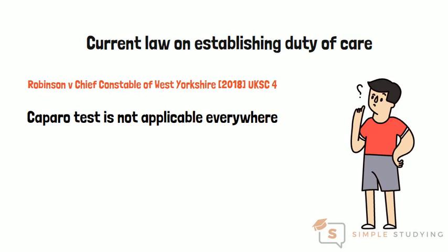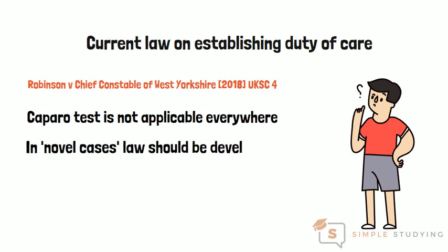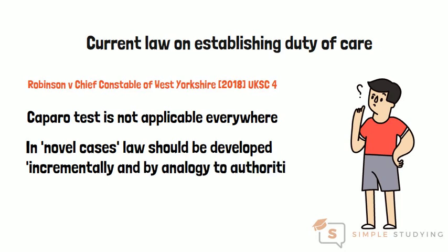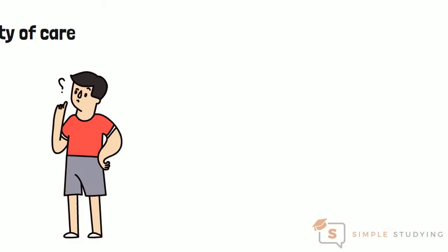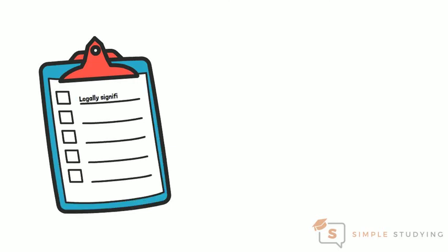Secondly, it is established that where there is a novel case in which the existing authorities do not provide an answer on whether a duty of care exists or not, the courts must develop the law incrementally and by analogy with established authorities. The courts should determine what the legally significant features of the previously decided cases are, so as to see whether any of these features are present in the novel type of case before them.